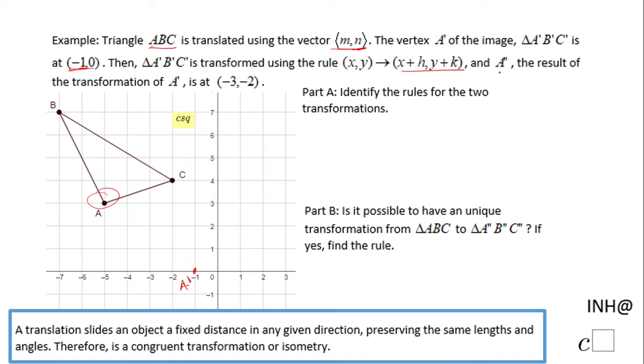We get A second which is (-3, -2), so somewhere here that will be A second. The first part of the question is to identify the rules for the two transformations.